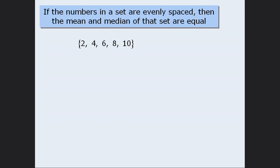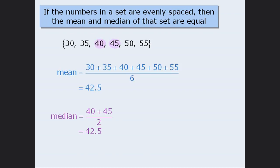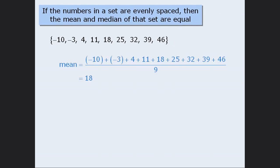Let's confirm that the mean and median are equal for this set of evenly spaced numbers. For this set, the mean is 6 and the median is also 6, so the property holds. Here's another set of numbers arranged in ascending order — each number is 5 greater than the one before it, so the numbers are evenly spaced. The mean is 42.5 and the median is also 42.5. For a set including negative values where each number is 7 greater than the one before it, the mean is 18 and the median is also 18. So for any set where the numbers are evenly spaced, the mean will always equal the median.